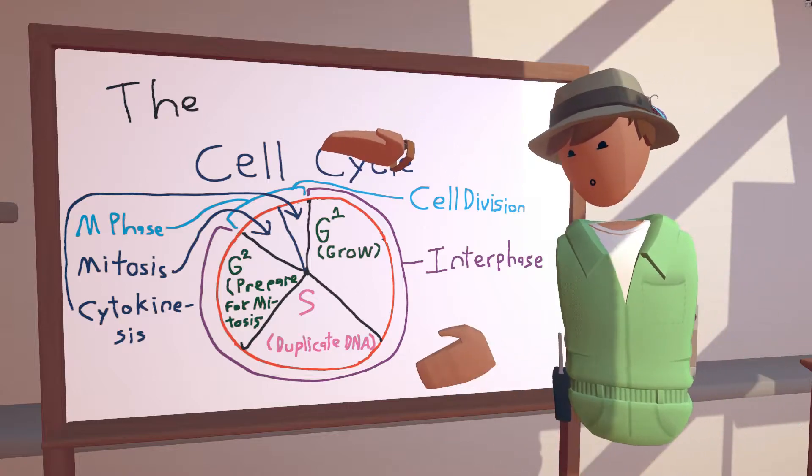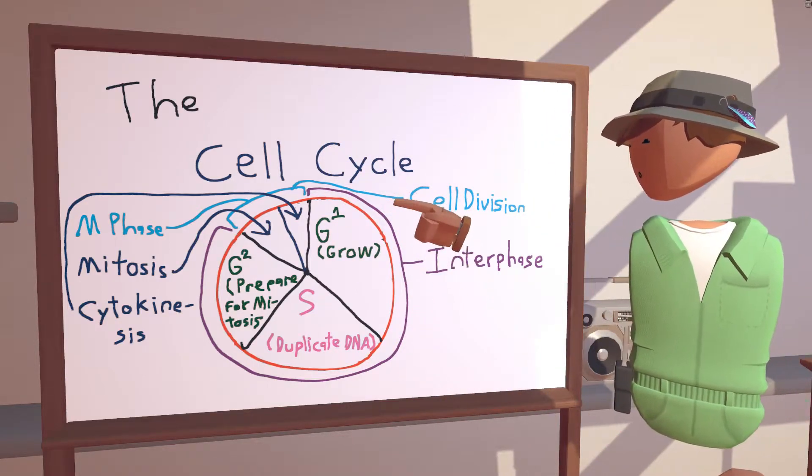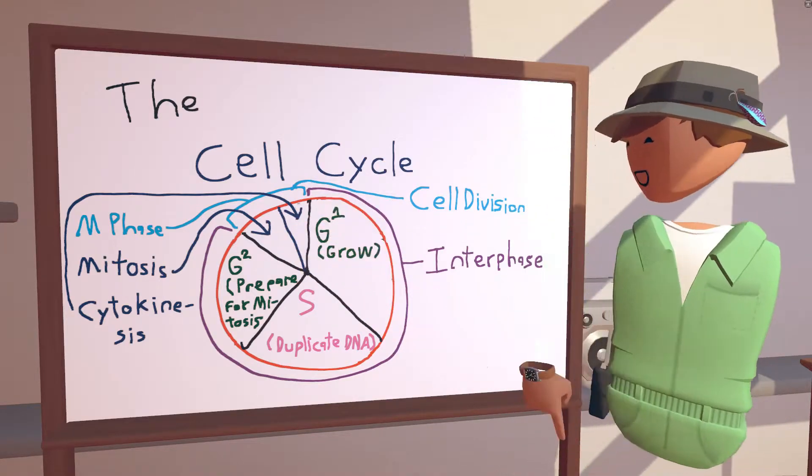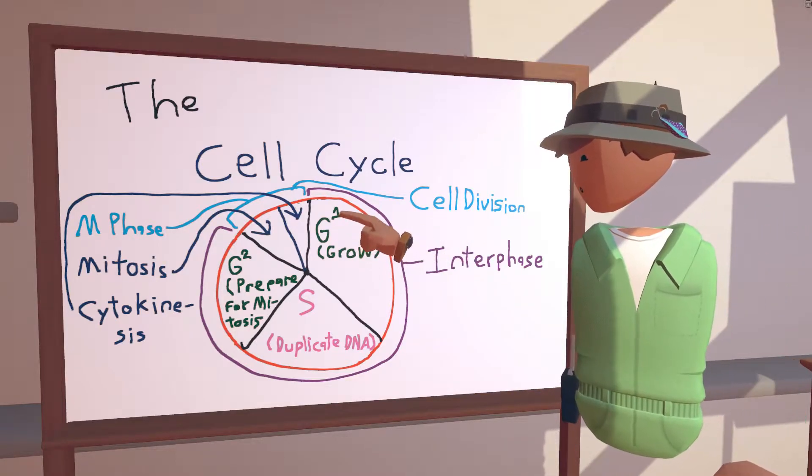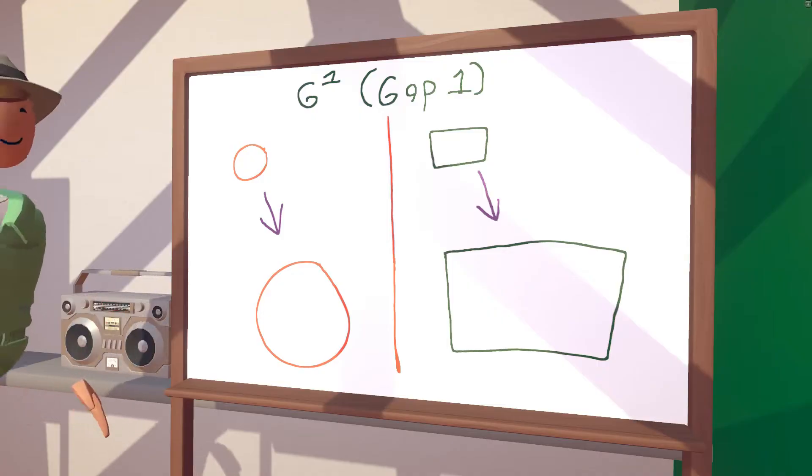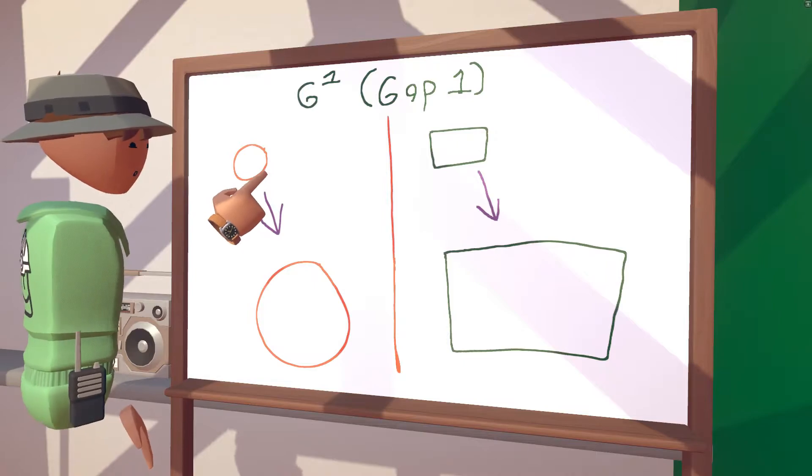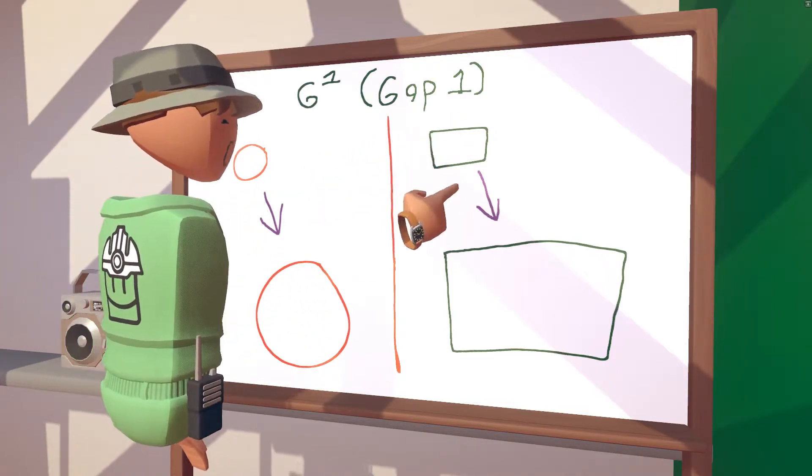So here is a quick overview of the cell cycle, and we're going to be going into detail into each section. So we're going to start with G1, and in G1, the cell grows and develops. Here on the left, we see an animal cell growing and developing, and on the right, we see the same with a plant cell.